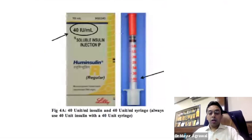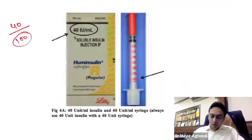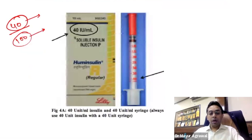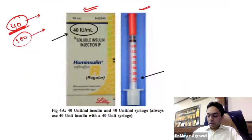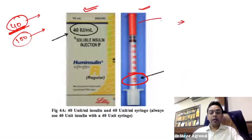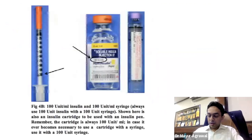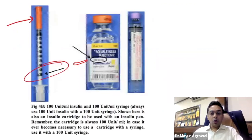Regarding vials, they come in two strengths: 40 IU per ml and 100 IU per ml. In 1 ml, you have 40 units (U40) or 100 units (U100). The patient must use the matching syringe — U40 insulin with a U40 syringe (red cap), and U100 insulin with a U100 syringe (orange cap). Importantly, almost all cartridges come as 100 units strength. If a pen is not working and the patient injects from a cartridge using a U40 syringe, a serious dosing error occurs.